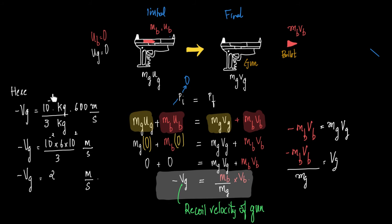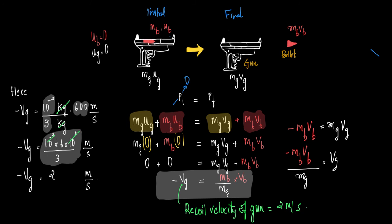Putting all the constants together: 10⁻² cancels with part of 600, and 6 divided by 3 is 2. Therefore −Vg = 2, meaning the recoil velocity of the gun is 2 meters per second.